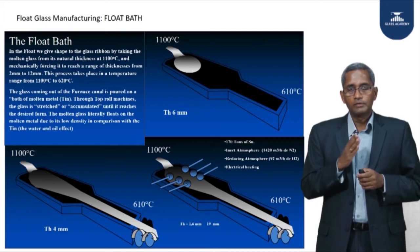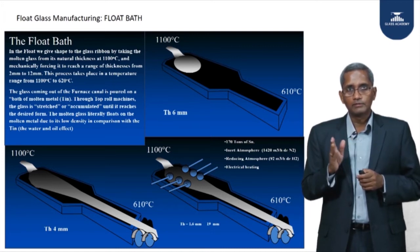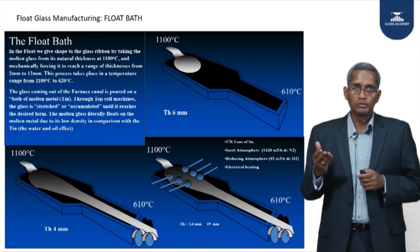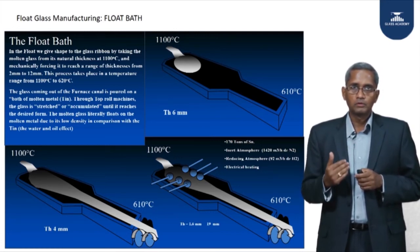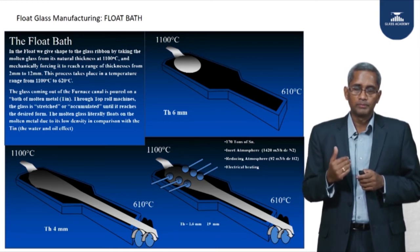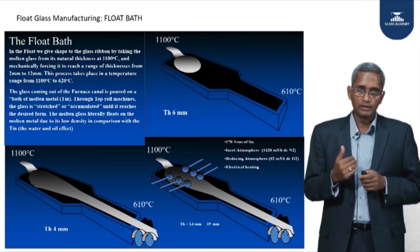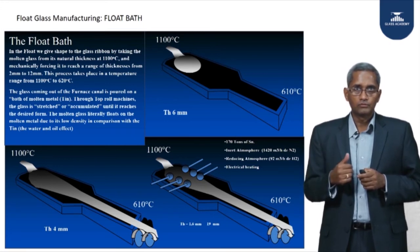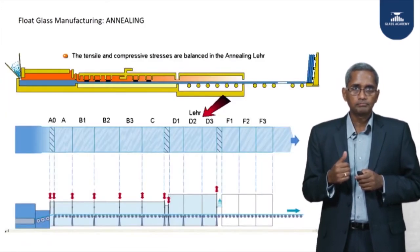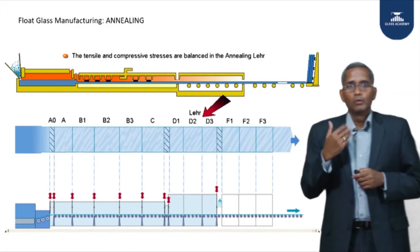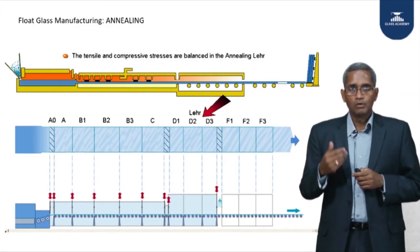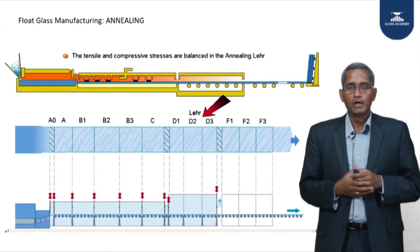Once the thicknesses are set, the glass is allowed to cool down. Aerial coolers placed downstream of the top rolls help reduce the glass temperature to about 610°C, at which point the glass is taken out on rollers. When the glass exits the float bath, it passes into the annealing lehr.